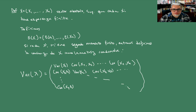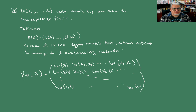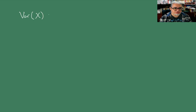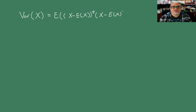En la diagonal tenemos las varianzas. El elemento ij de esta matriz es la covarianza de xi con xj. También podemos pensar que la varianza del vector x la podemos escribir como la esperanza del vector x menos la esperanza de x, traspuesto, multiplicado por x menos la esperanza de x. Es como una especie de producto punto entre estos dos vectores, como una norma cuadrada.